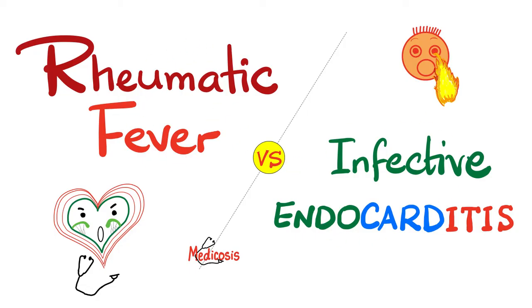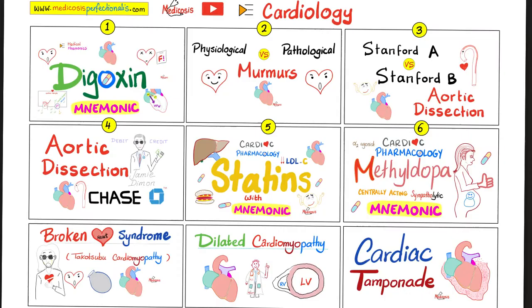Rheumatic fever is caused as a reaction to only one bacteria, which is group A beta-hemolytic streptococcus, also known as streptococcus pyogenes. But infective endocarditis could be caused by many bacteria and many fungi. This is my cardiology playlist — please try to watch these videos in order.